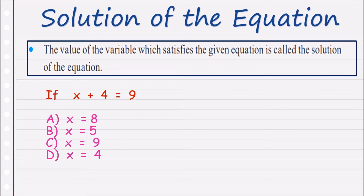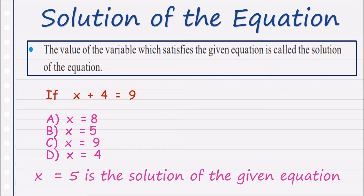So the solution of the given equation x plus 4 equals to 9 is x equals to 5.